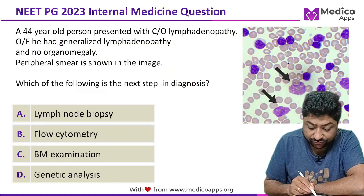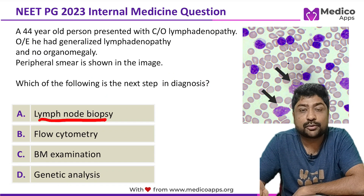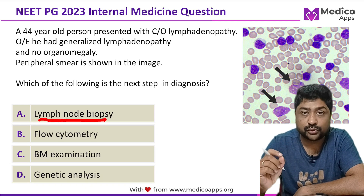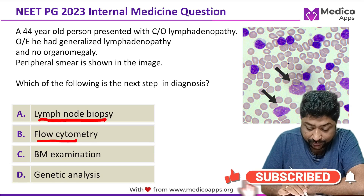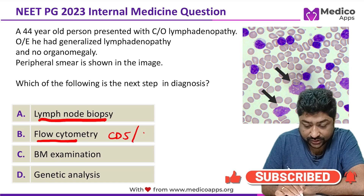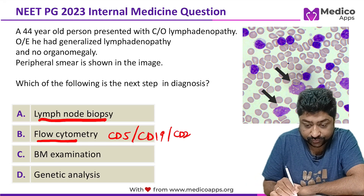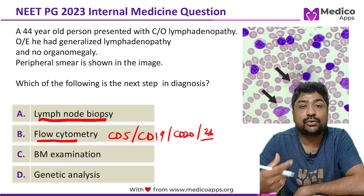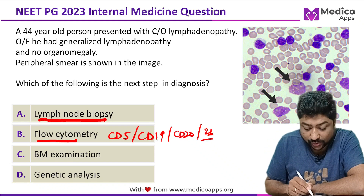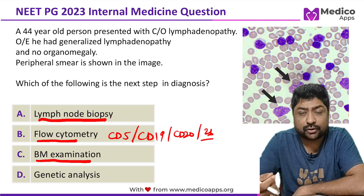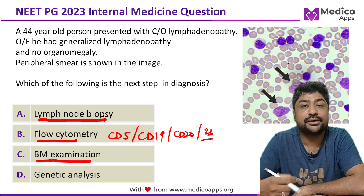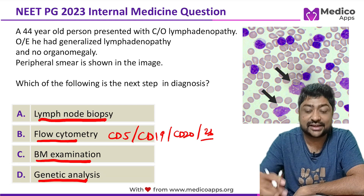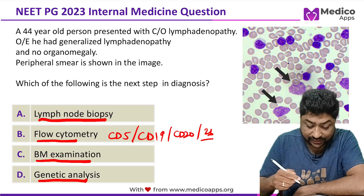For lymph node biopsy in CLL, we would get diffuse lymph node effacement. For flow cytometry, CD markers like CD5, CD19, CD20, and CD23 can be present and help narrow down the diagnosis. Bone marrow examination can give important clues but is generally not done initially to confirm the diagnosis — it is done later during patient management. Genetic analysis is used when we want markers for prognostication.